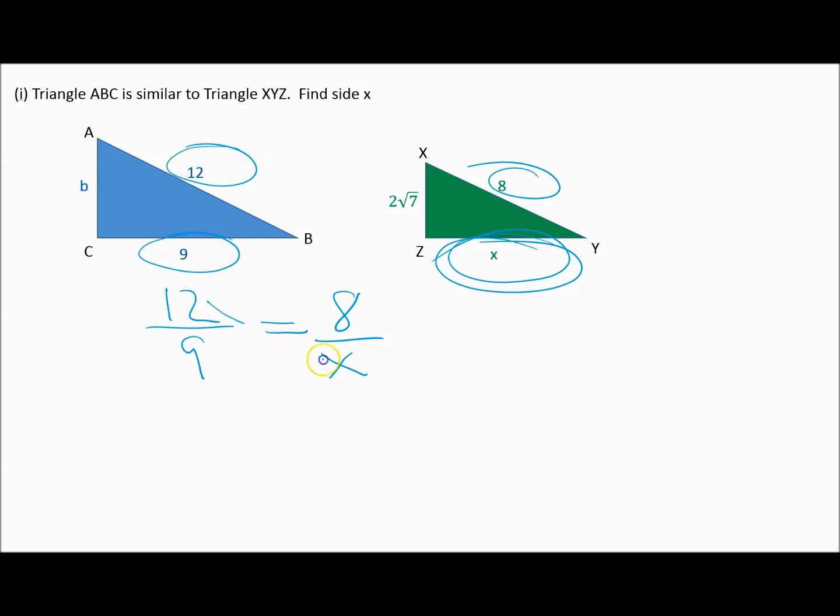So again, because these are similar triangles, we can say 12 is to 9 as 8 is to x. And now we just cross multiply. So 12 times x is 12x, and 8 times 9 is 72. I divide both sides by 12, and we know that x equals 72 divided by 12 is 6. And so our answer is 6. Now normally we have a unit, but 12 and 9 and 8, we had no units. This could be 6 miles, 6 inches, 6 centimeters. We don't know. But it's 6. So the length of side x is 6.